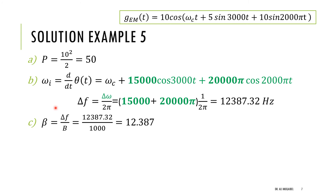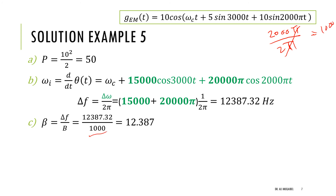To find beta, we use beta = delta_f / B. The bandwidth of the modulating signal is the highest frequency component. The two tones have angular frequencies; dividing the higher one (2000π rad/s) by 2π gives 1,000 Hz. So B = 1,000 Hz. Dividing delta_f by 1,000 gives beta ≈ 12.387.